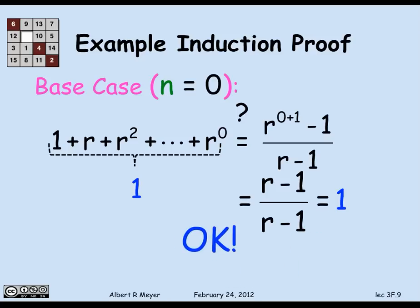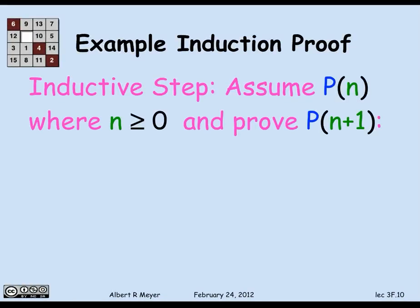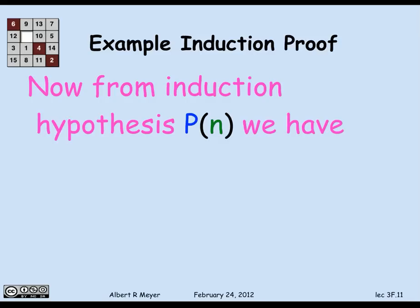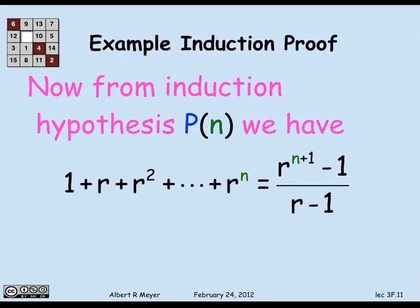The next step in the template is the inductive step: we assume p of n holds, and use that assumption to prove p of n plus 1 holds, where the only thing we know about n is that it's greater than or equal to 0, and our proof must work for all possible such n. This is p of n plus 1 — obtained by replacing n's in the equation with n plus 1's.